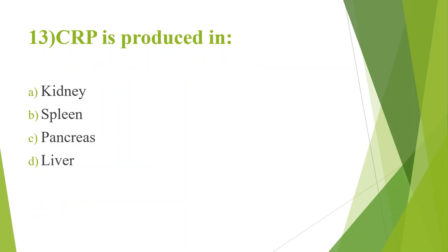13th question: CRP is produced in? Option A, Kidney; Option B, Spleen; Option C, Pancreas; Option D, Liver. Answer is Option D, Liver. CRP is a C-reactive protein which increases when there is an inflammation in your body.